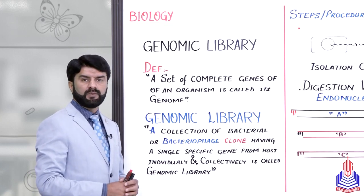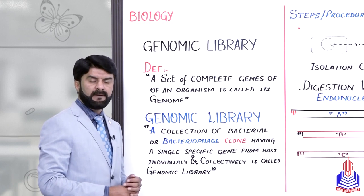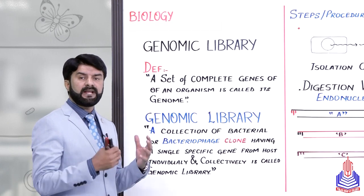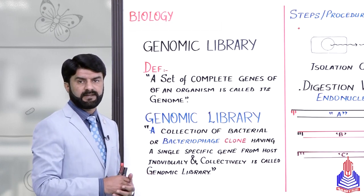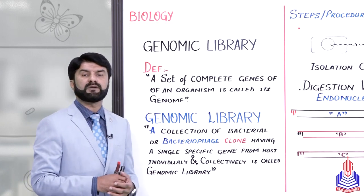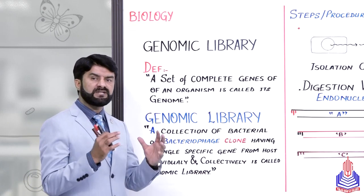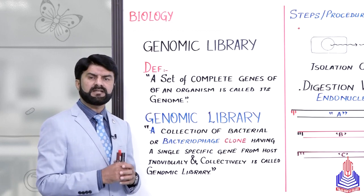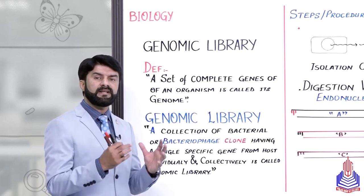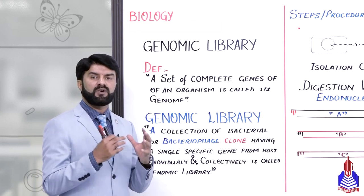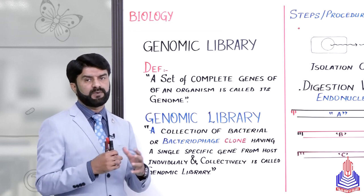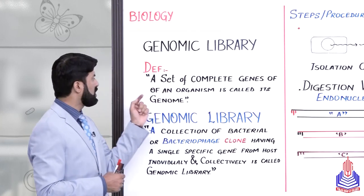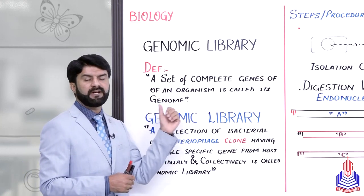My dear students, what is the definition of the genome first? One can be a virus, one can be a bacterium, one can be a plant, one can be an animal, one can be a human — any individual. The aggregate or aggregation of all the genes of that individual, collectively, is called the genome. A set of complete genes of an organism is called its genome.